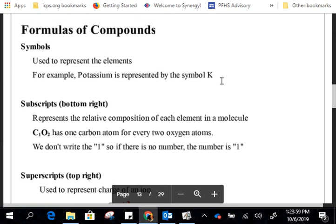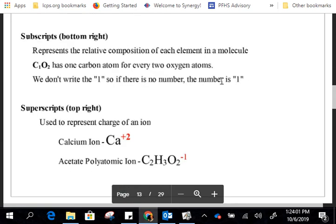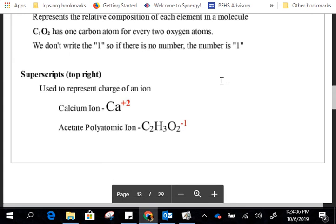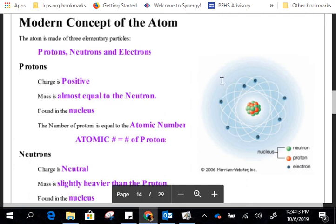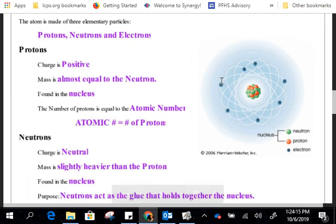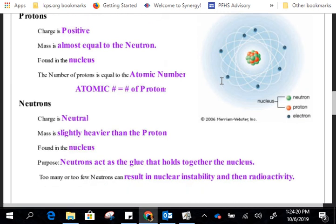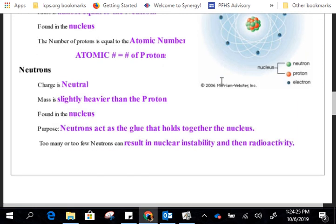And then we talked about how elements are represented by symbols and subscripts tell us the ratio of the elements as they get put together. And superscripts represent the charges. Whether they're positive or negative is determined by looking at the sign on the number, on the symbol. Protons have a positive charge, not quite but almost equal to the mass of a neutron found in the nucleus. Every periodic table says atomic number, but atomic number is actually number of protons. The neutrons are neutral. They have no charge. They are also in the nucleus, slightly heavier than a proton, but just barely.